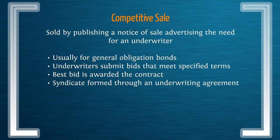There are two types of offerings. One is mainly geared toward general obligation bonds — that's the competitive sale. Underwriters submit bids that meet published terms by the issuer, and the best bid is awarded the contract. In a competitive sale, syndicates are formed through an underwriting agreement, and again this is focused primarily on general obligation bonds.